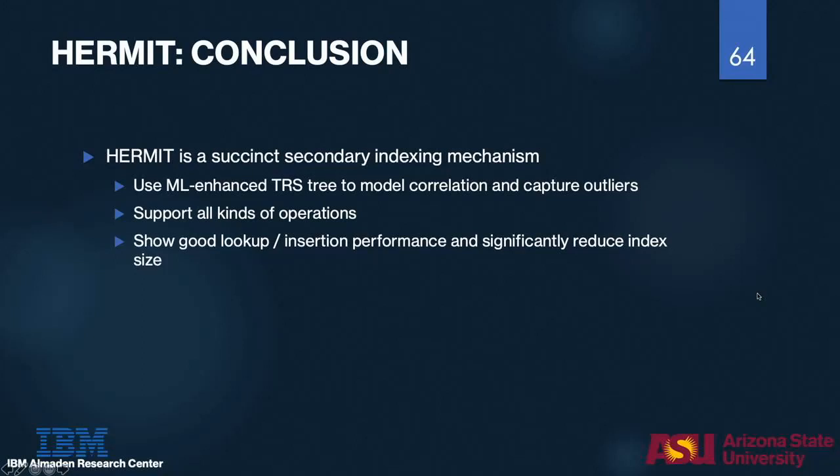In conclusion, HERMIT is a succinct secondary indexing mechanism that uses machine learning and tree structure to model the correlation between columns, and it can also capture outliers. A question was raised about whether performance depends on the order of splits — specifically, whether the first split could be too bad and result in more and more splits when a better, smaller number of splits existed.